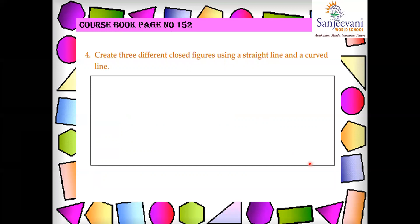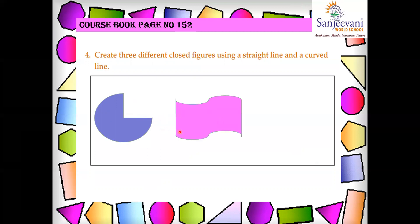Next, create three different closed figures using a straight line and a curved line. We have to make three different closed figures. First, using a curved line, I have made this closed figure. Then another figure using curved line and straight line combined. Please draw these three figures in your course book — you can pause the video and copy down the answers.